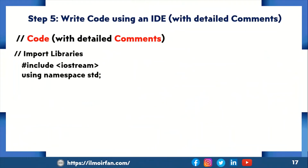Step 5 is write code using an IDE with detailed comments. To summarize the first four steps: first, I completely and correctly understood the real world scenario. After that, I explained author and system information in detail. In the third and fourth steps, I used the information provided in the real world scenario to understand the purpose of the program and input, processing, output. Now in the fifth step, I will write high quality C++ code using Visual Studio IDE to solve the problem mentioned in the real world scenario.